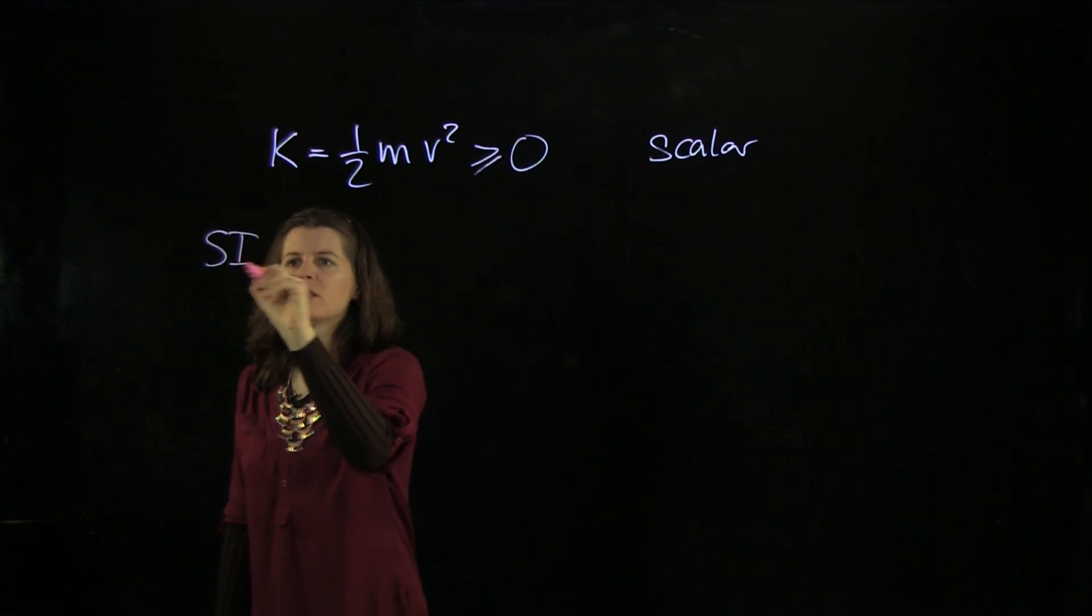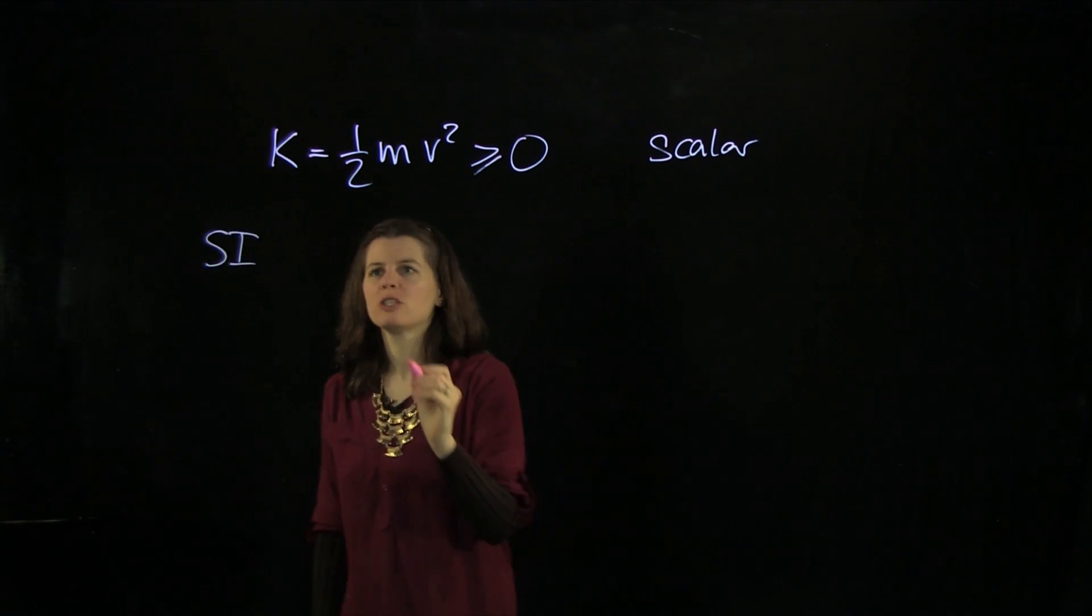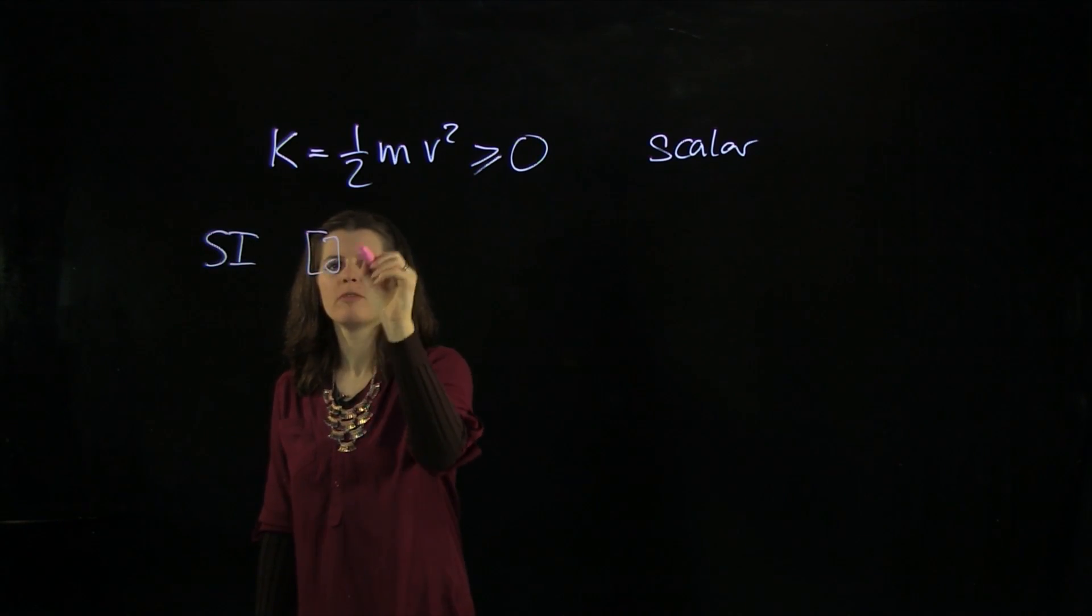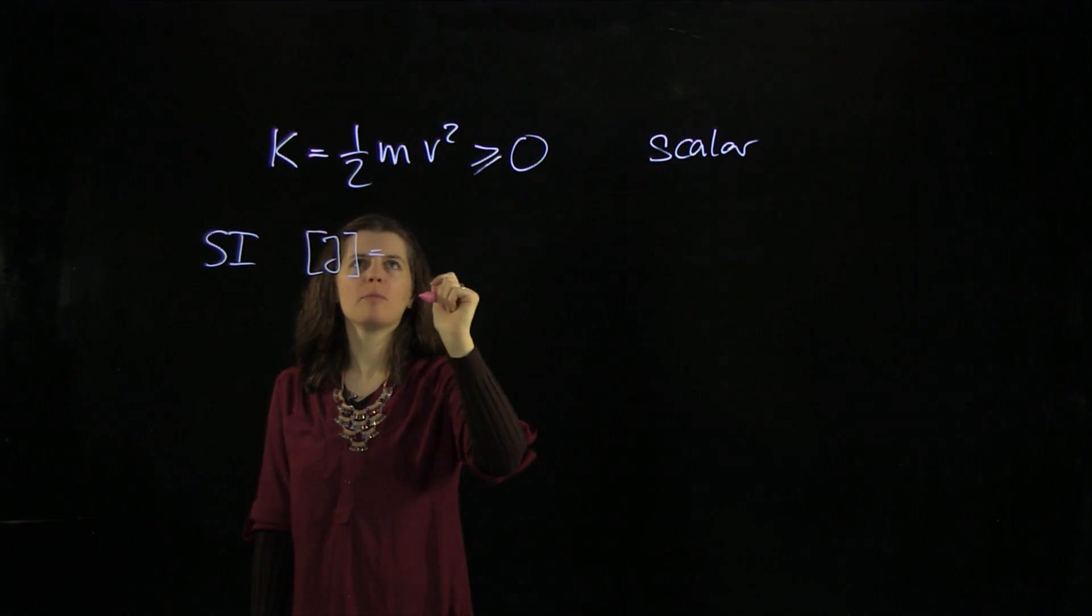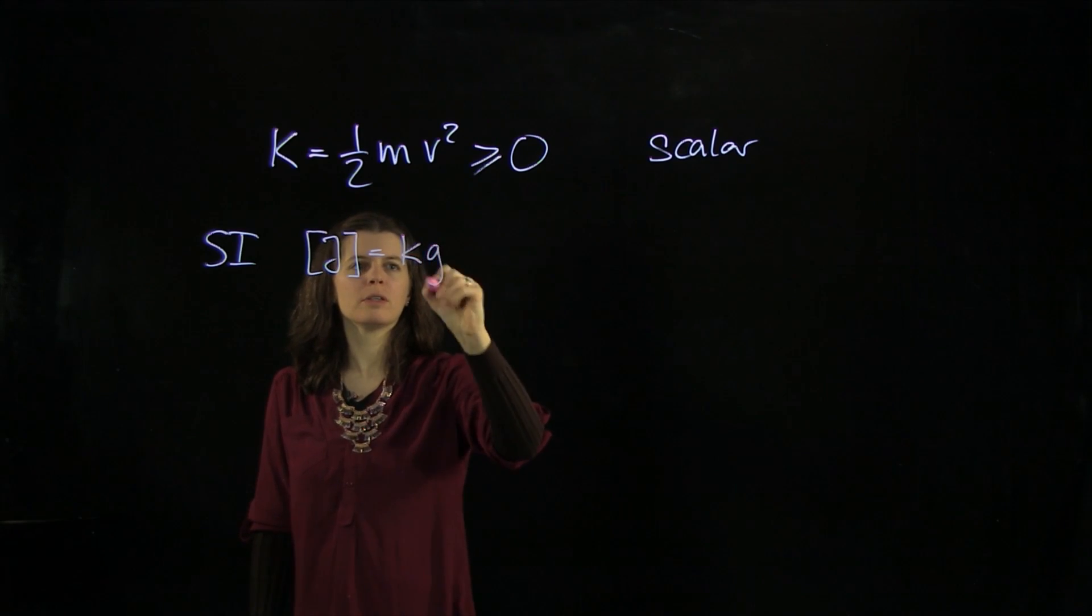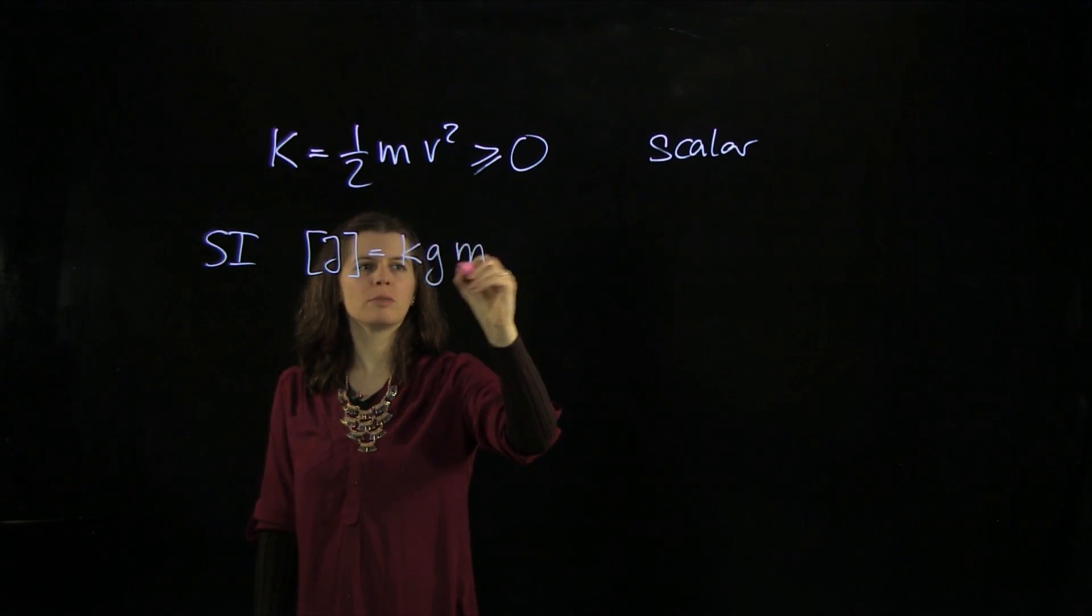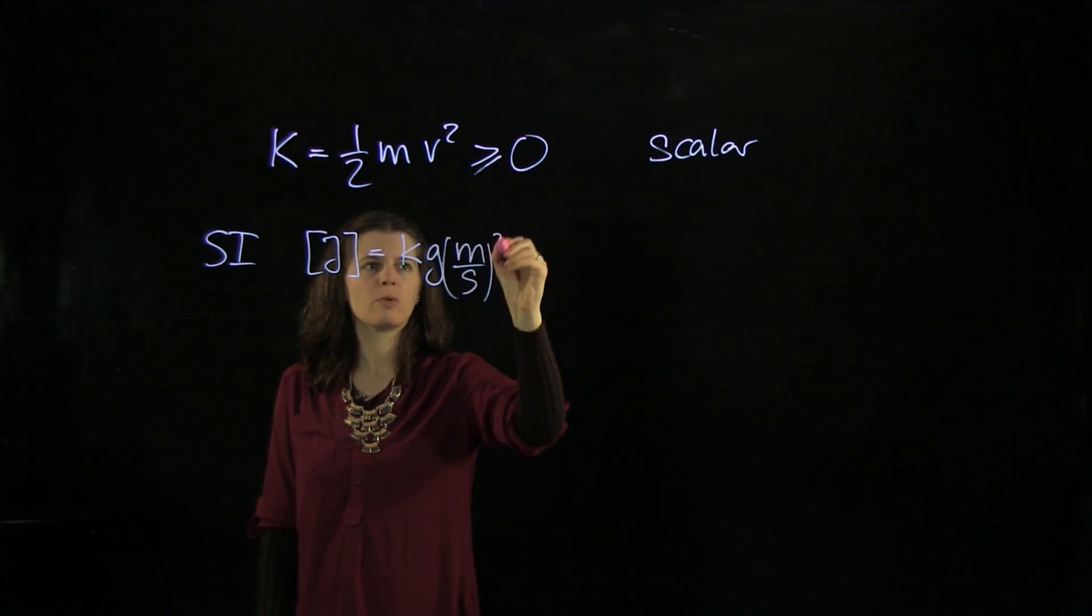The SI unit for kinetic energy is joule, so we have one joule here for kinetic energy. And the units come from this, so we have kilogram and then meter per second squared.